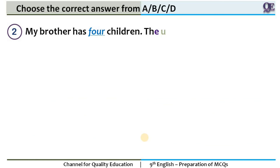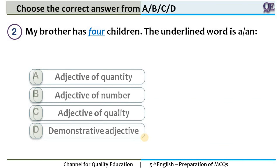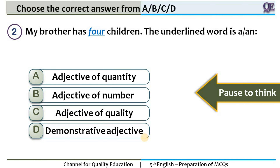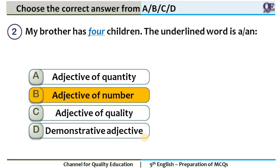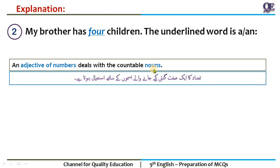Question two: 'My brother has four children.' The underlined word is? You have 10 seconds to think. The answer is adjective of number. An adjective of number deals with countable nouns. Countable nouns deal with numbers — you can count them. Here 'four' tells you exactly how many, so you choose adjective of number.